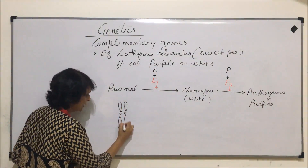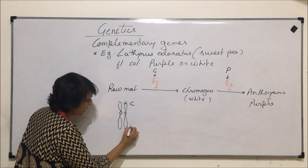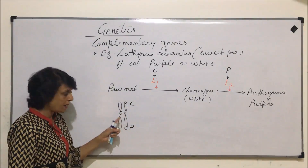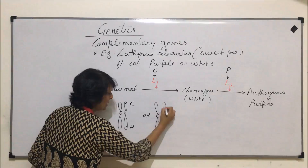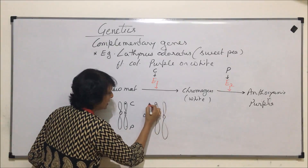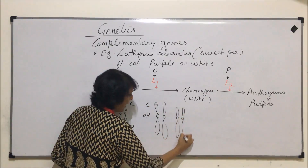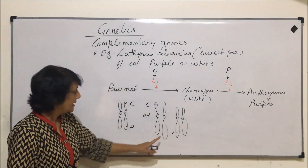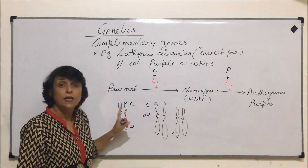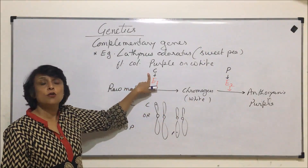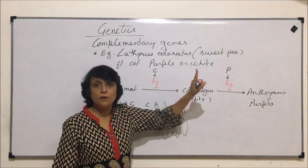Gene C could be on one chromosome, and gene P could be at a different locus on the same chromosome, or P could be on a different chromosome entirely. The condition required for purple color formation is that C must be in its dominant form and P must also be in its dominant form.